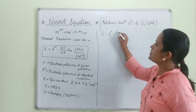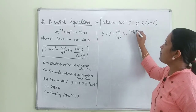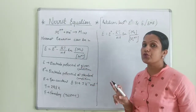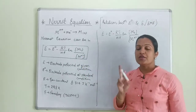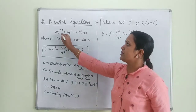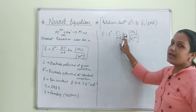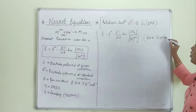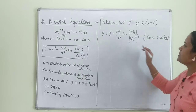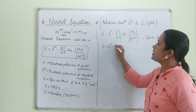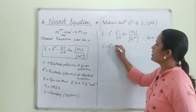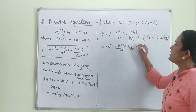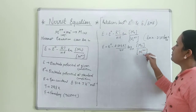The equation becomes: E = E° − (RT/nF) × ln([M(s)]/[M^(n+)]). Now, M(s) means the electrode in solid state. We know that ln X can be written as 2.303 × log₁₀(X). So the equation becomes: E = E° − (2.303RT/nF) × log₁₀([M(s)]/[M^(n+)]).